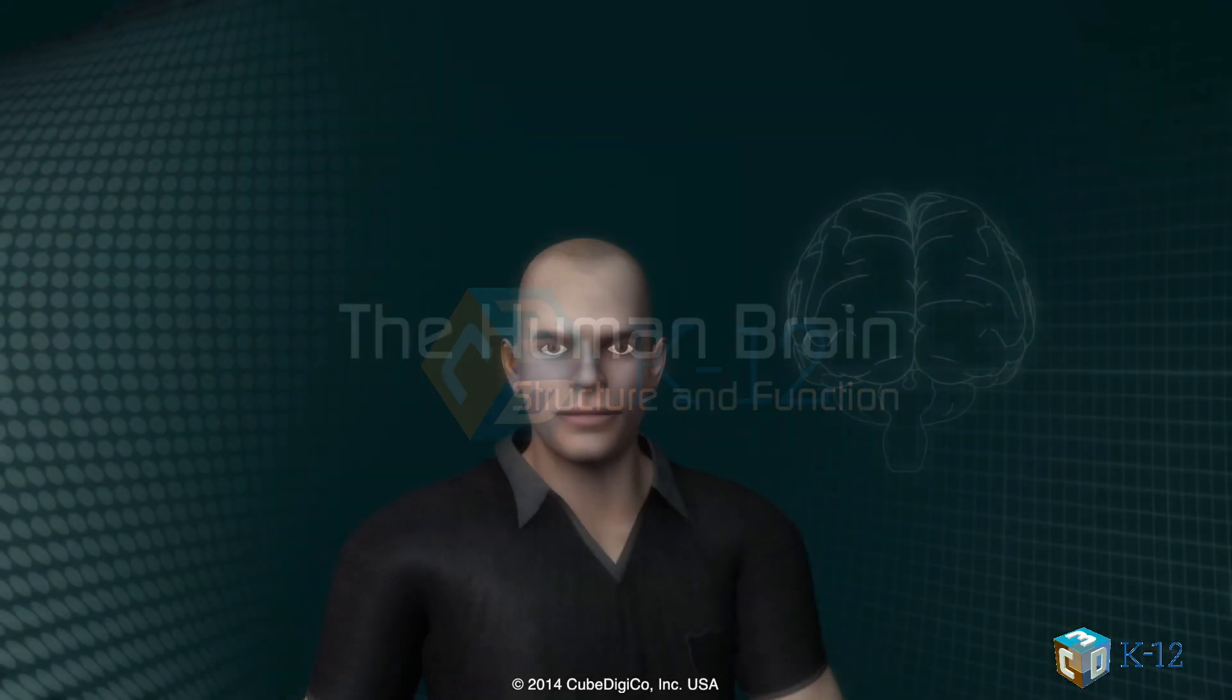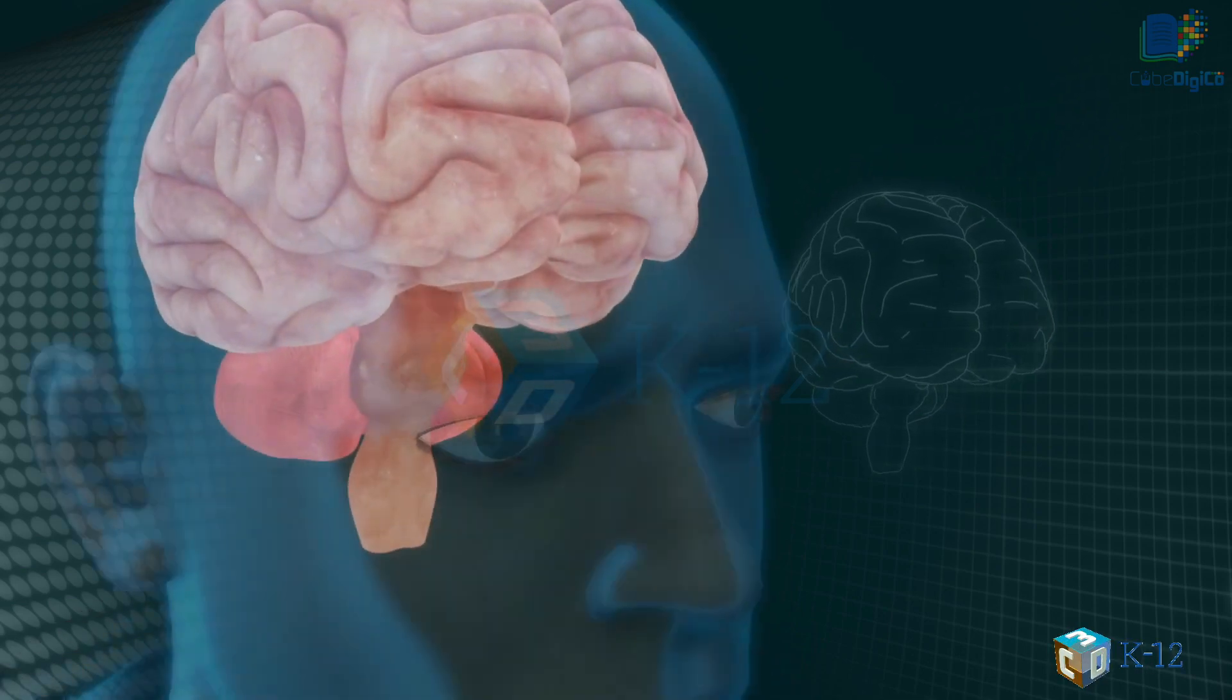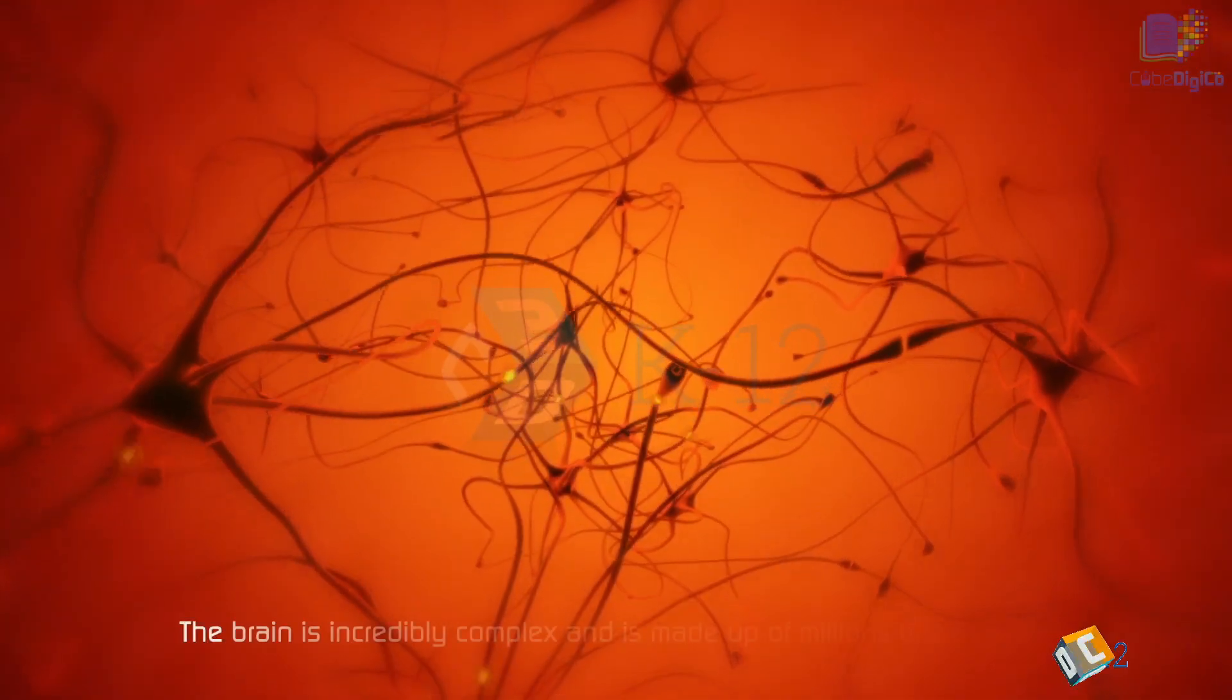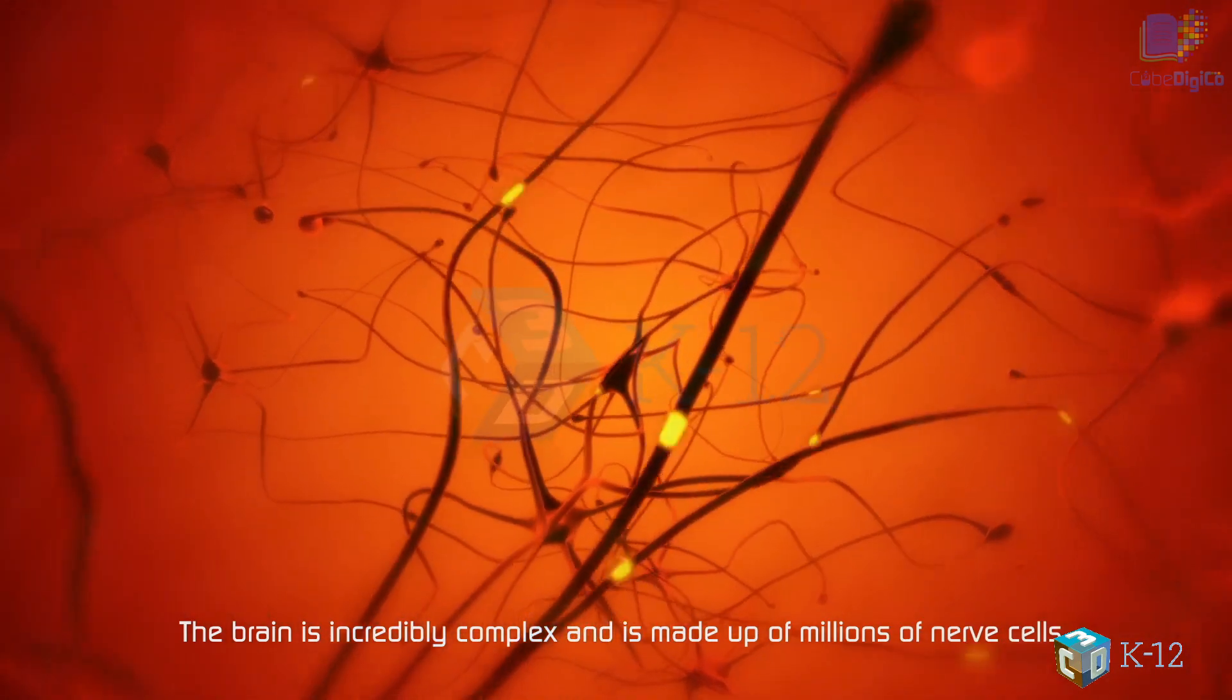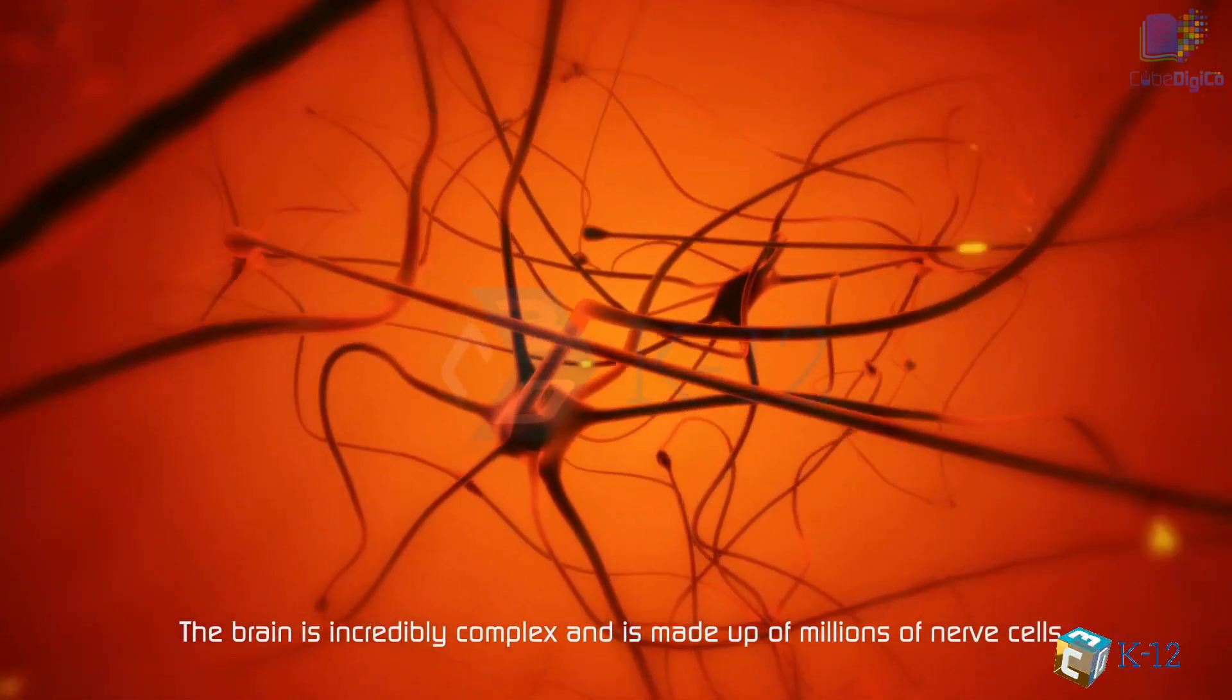The human brain. The brain is incredibly complex and is made up of millions of nerve cells. The brain is the center of intelligence, interpreter of the senses, initiator of body movement and controller of behavior.